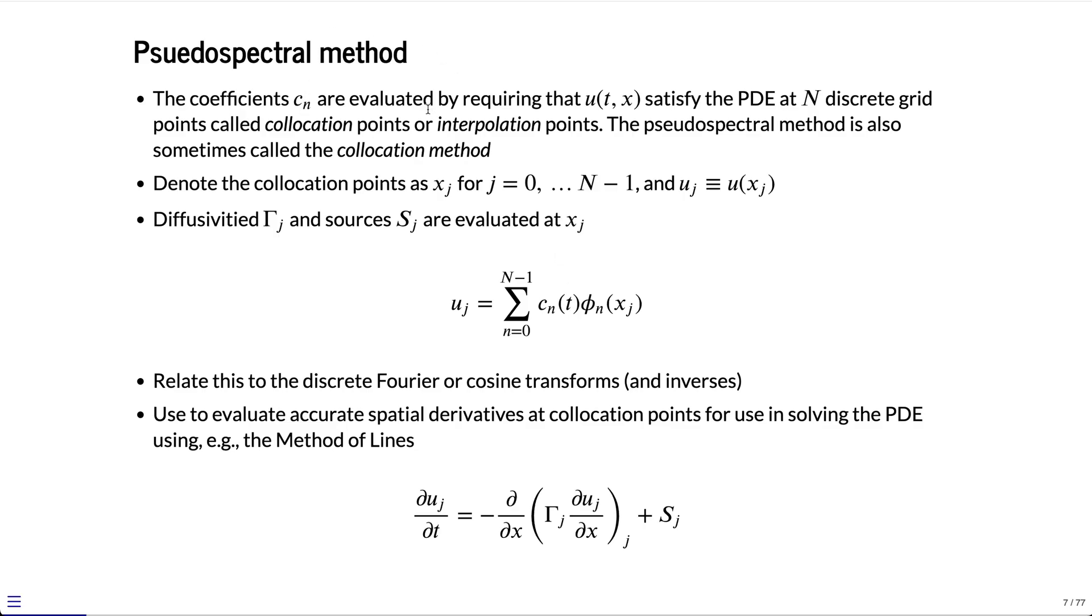We use this equation to evaluate accurate spatial derivatives at collocation points. The whole name of the game with the pseudospectral method is really to get high order approximations to the derivative terms that appear in this equation. Otherwise, we're discretizing the equation. You can see we have uj at specific grid points. We're basically going to solve this PDE at each grid point, and by discretizing it as we've done at the specific grid points, we can solve this by advancing in time using the method of lines.